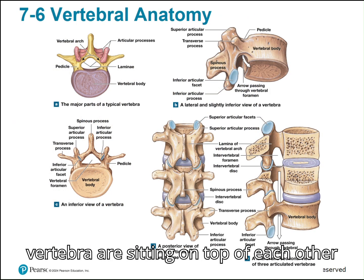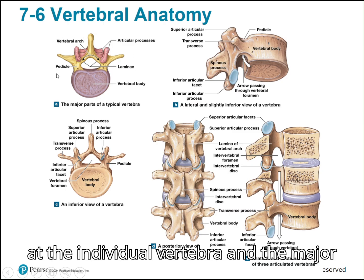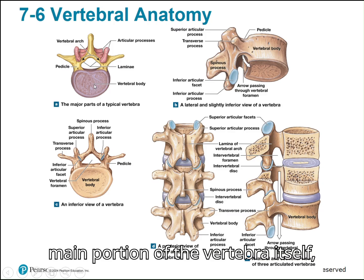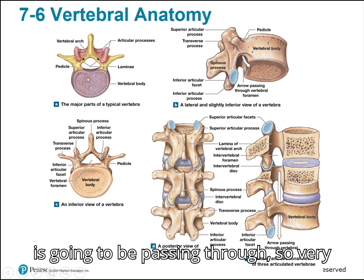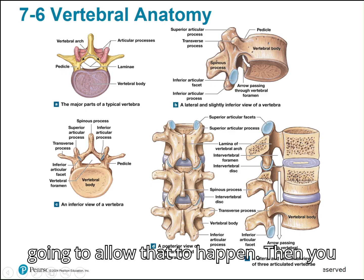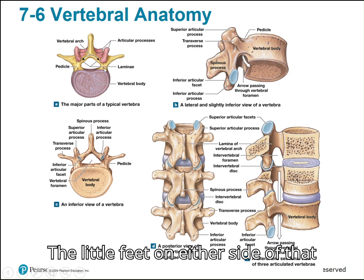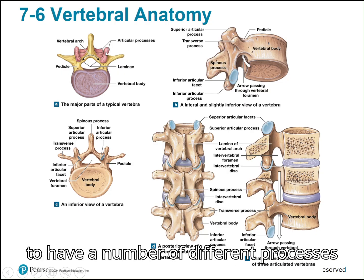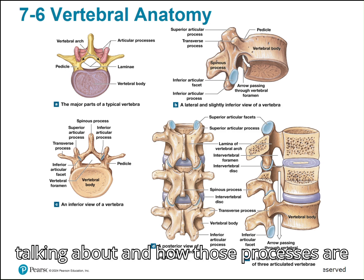All those vertebrae are stacked on top of each other, creating the vertebral column. Looking at an individual vertebra, the major parts apply whether you're talking cervical, thoracic, or lumbar. You'll have the vertebral body, which is the main portion, and then a big opening — the vertebral foramen — where the spinal cord passes through. The vertebral arch sits on top to allow that space, and the little feet on either side of the arch are called the pedicles. You also have a number of different processes — irregular structures coming outward from the vertebra.